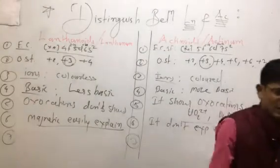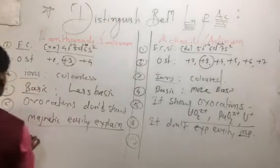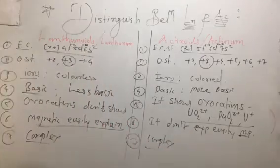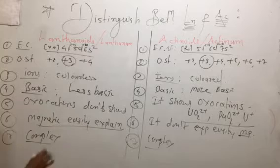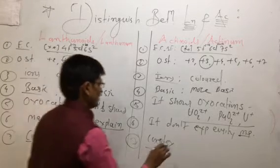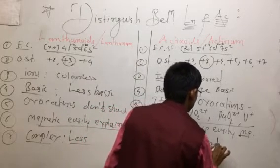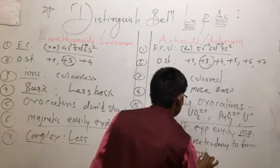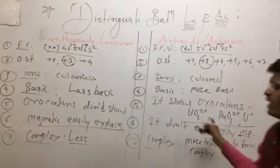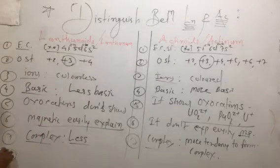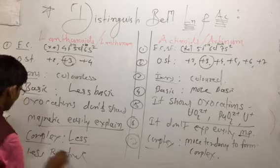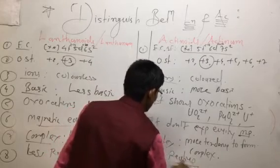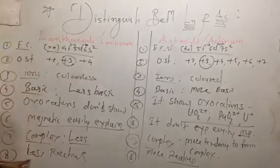Next point: tendency to form complexes. Lanthanoids show less tendency to form complexes. Actinoids show more tendency to form complexes. Actinoids are also more reactive.